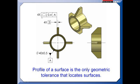There's only one geometric tolerance that locates surfaces, and that's profile of a surface. So the person should have used profile of a surface, 4x.